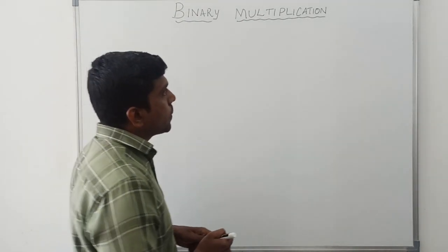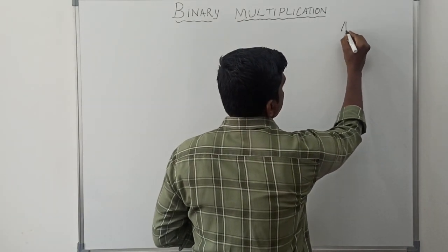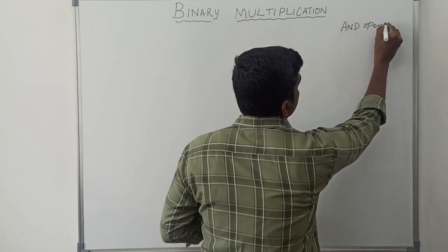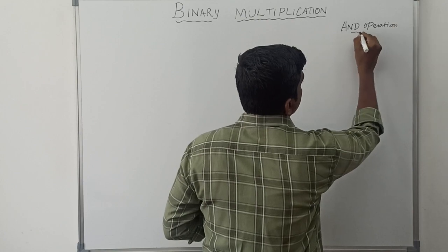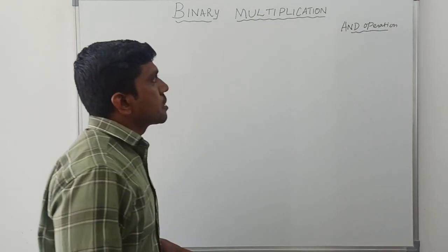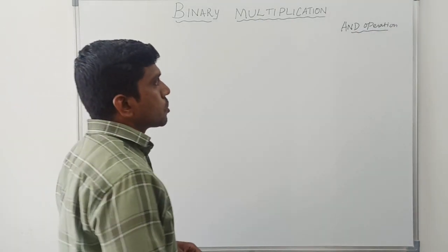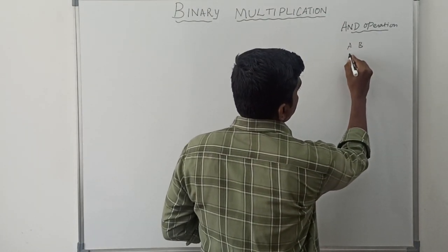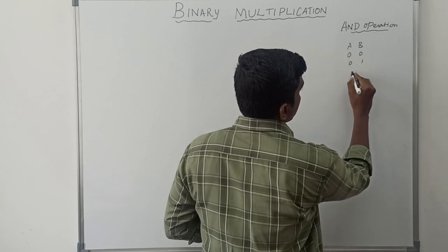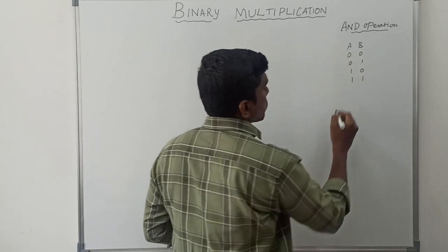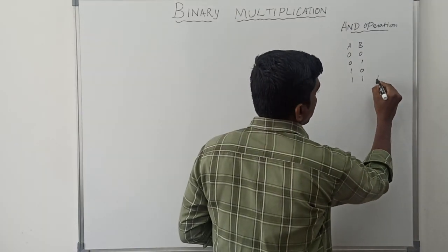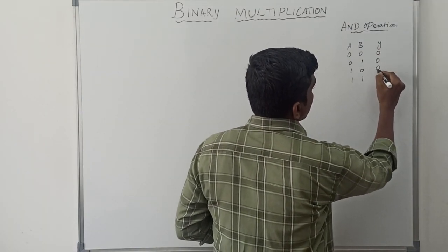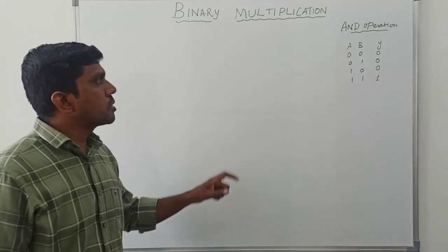Binary multiplication is equivalent to AND operation. In AND operation, both inputs must be high for the output to be 1. With inputs A and B: 0·0=0, 0·1=0, 1·0=0, 1·1=1. So when both inputs are high, the corresponding output is 1; else the output is 0. This is the AND operation, and it is used in binary multiplication.